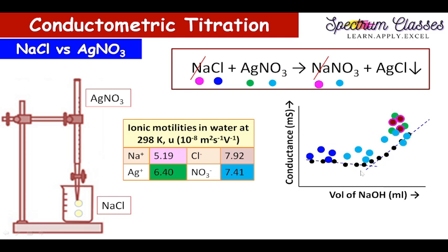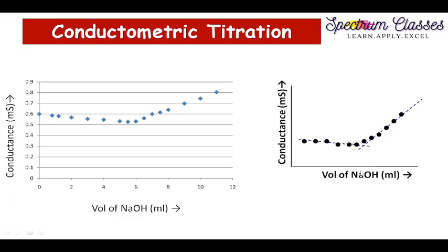I hope you understand the concept. Now we are just going to compare the graph. The graphs are like this, and after extrapolating the lines we will get the value of the volume added at the equivalence point. By dropping a normal to this, we will get the volume of AgNO3 added for complete precipitation of Ag+ and Cl−. For the calculation part, the equation is N1V1 = N2V2. Here N1 is for NaCl and N2V2 is for AgNO3.